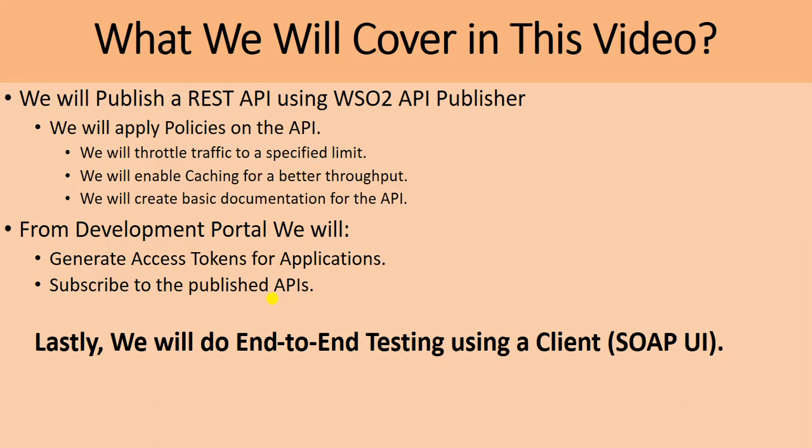Once the API has been published, I will go to the developer portal — previously called the API Store in earlier versions of WSO2 API Manager — and show how to create applications, generate access tokens (either OAuth tokens or JWT), subscribe to published APIs, and call them from the client side. For end-to-end testing I will use SoapUI, though you can also use Postman or any programming language. Let's jump into the actual tutorial.